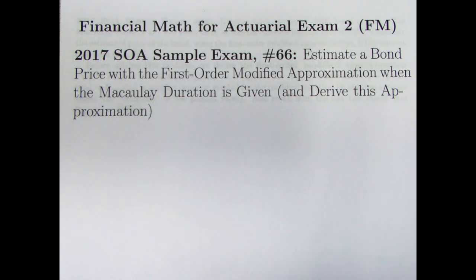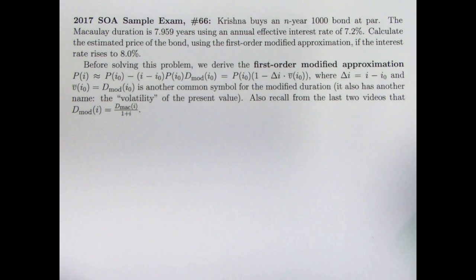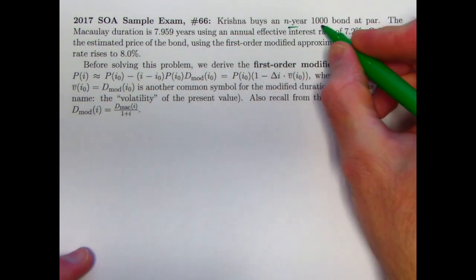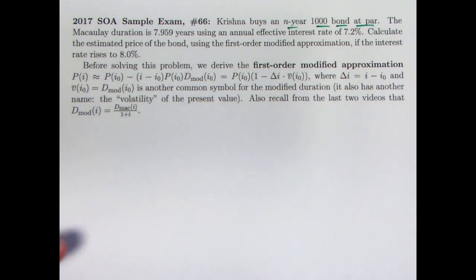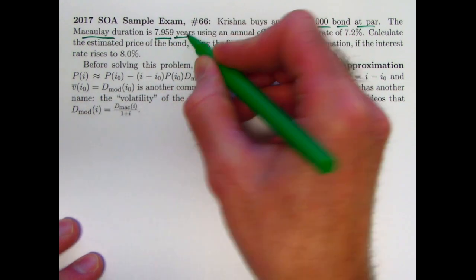We will apply these ideas to something called the first-order modified approximation. It's sample exam problem number 66 from 2017. We'll be estimating a bond price with this first-order modified approximation when we're given the Macaulay duration, and we'll derive the approximation for good measure as well. So here is the problem. Krishna buys an n-year 1,000 bond at par.